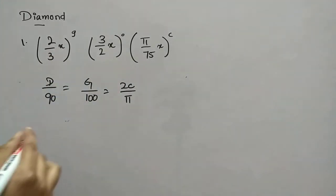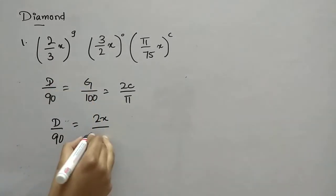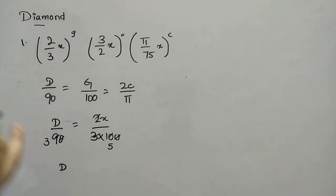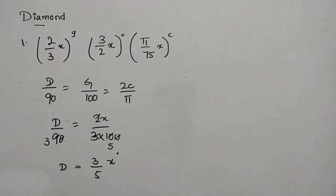So it is 2 by 3 x grades, 3 by 2 x degrees, and pi by 75 x radians. Now we use the formula d by 90 is equal to g by 100 is equal to 2 radians by pi. Now first we will put d by 90 and g by 100. So d by 90 is equal to 2x by 3 into 100. When you cancel everything, d is equal to 3 by 5 x degrees.